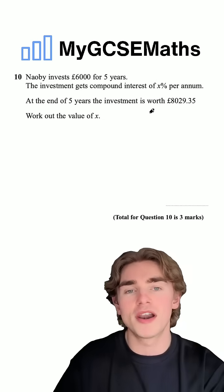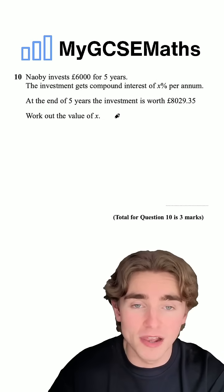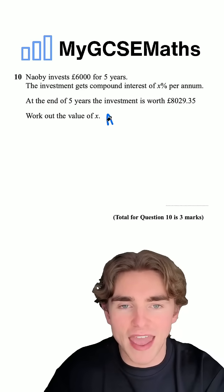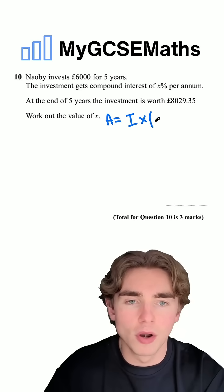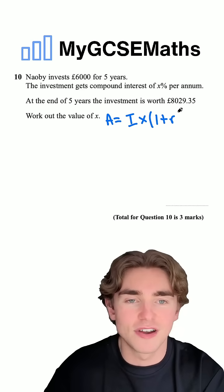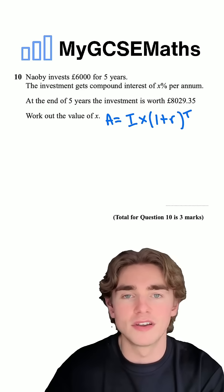What are we going to do? Step number one, let's write out our compound interest formula. We know that our end amount A is going to be equal to our initial amount I times by one plus R, where R is our interest rate as a decimal raised to the number of time periods.